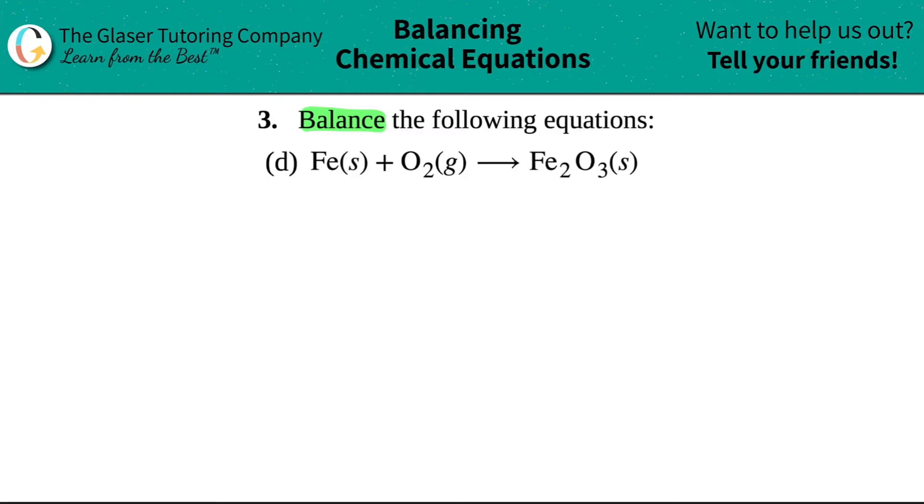Okay, so the first thing I'm going to do is I'm just going to rewrite this because they don't really give me a lot of room to put my coefficients. So I have Fe, which is iron, plus oxygen O2 yields Fe2O3. That looks pretty neat in the center.